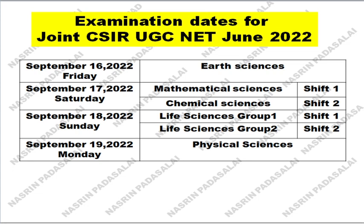Here you can get a detailed idea about the examination dates for the Joint CSIR UGC NET examination. The exam is going to be conducted on 16th, 17th, 18th, and 19th of September.